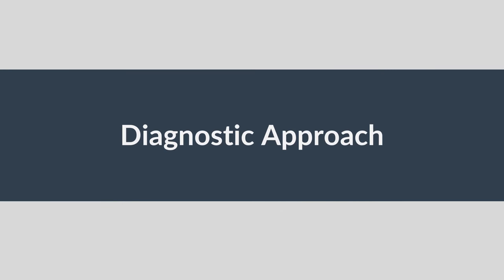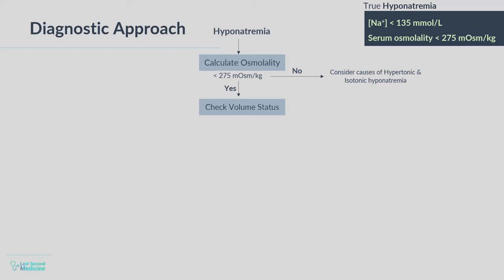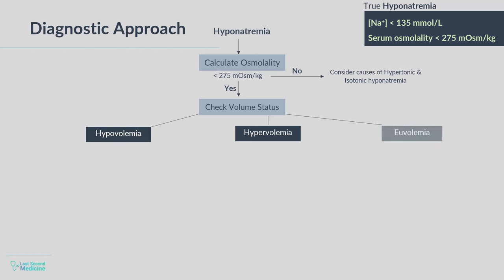Now the diagnostic approach — let's see how to approach hyponatremia clinically in a few simple steps. First, calculate osmolality and establish that you are dealing with true hyponatremia. Then check the volume status of the patient, place the patient in one of the three groups, and see if clinically you can identify the cause of hyponatremia. Then do urinary sodium, and additionally in euvolemic hyponatremia, do urine osmolality to further narrow down the differential.